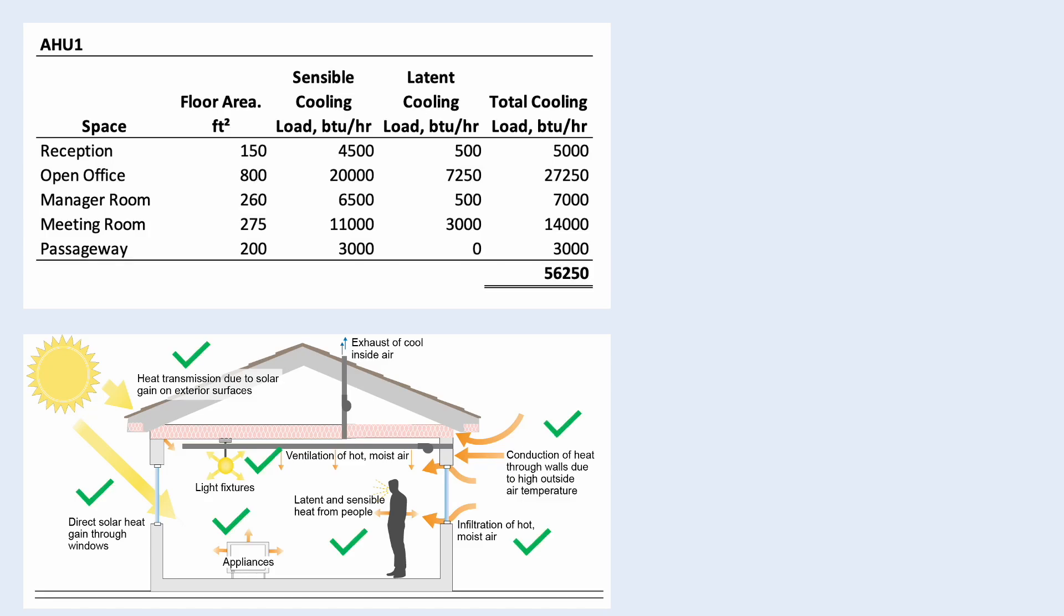Let's say we have done the load calculation. You have considered the heat gain from the wall, window, and other sources. You tabulated your result and you found your total cooling load. Now, is this the cooling capacity that you need? It doesn't seem right.